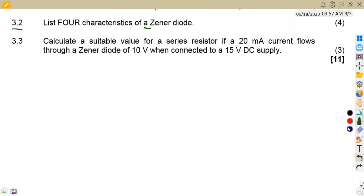We are given here to calculate the suitable value of a series resistor. If a 20 milliamp current flows through a Zener diode. So we are given the current flowing through the Zener diode of 20 milliamps, asked to calculate the value of the series resistor that is going to be connected when the Zener voltage is given as 10 volts. If you are to check from this question that we are given, we are not given the current across the load. So meaning to say we assume that to be zero.